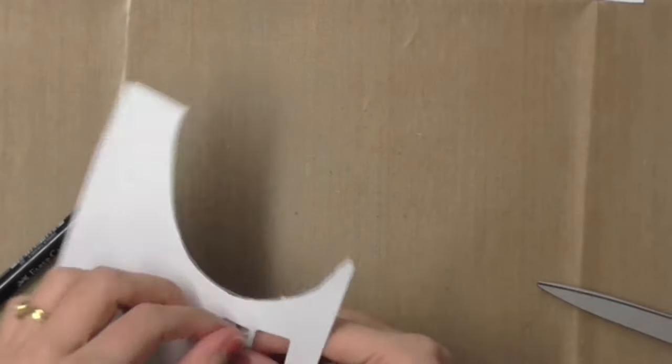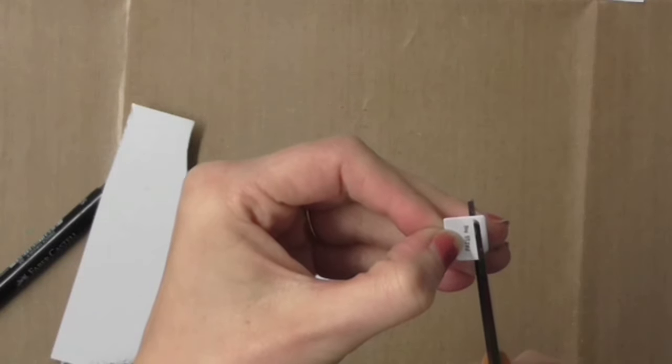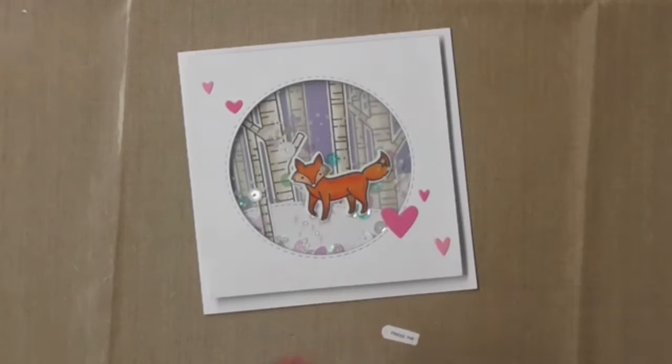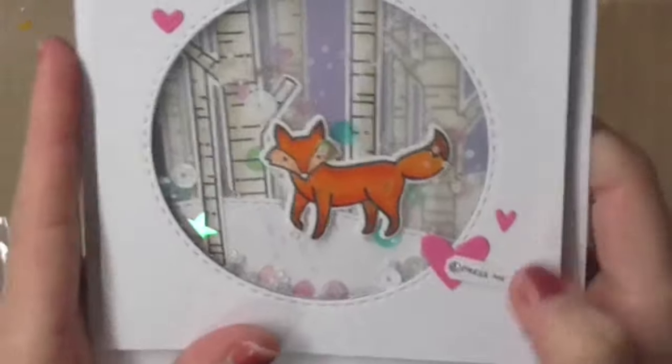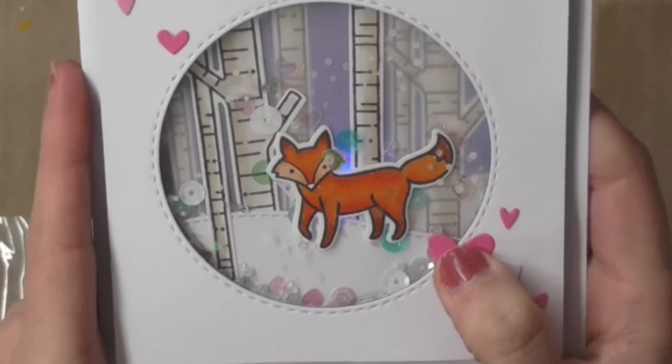Then I've cut out some little hearts using the Simon Says Stamp hearts die and I also picked out a die from Quick Cuts that cuts out these little tiny tags. On one of them I wrote 'press me'.